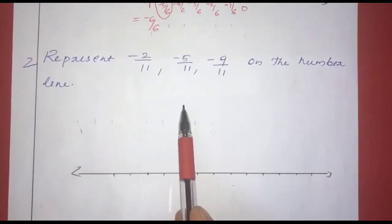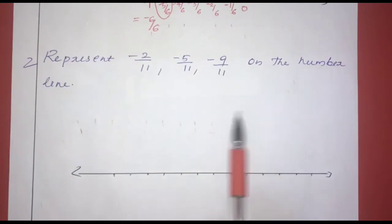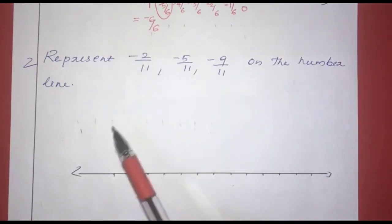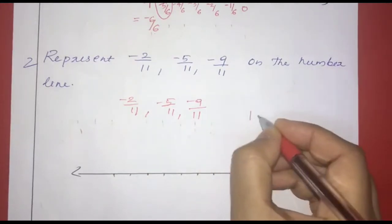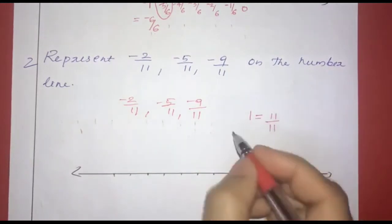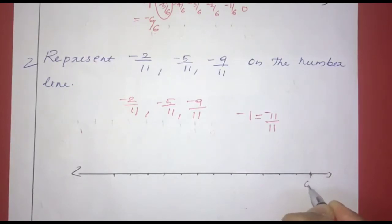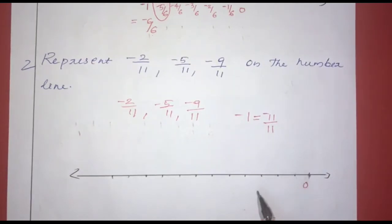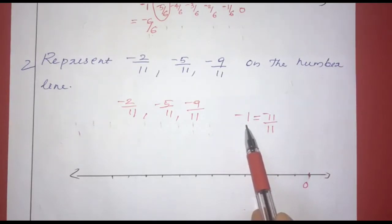The second question is: represent negative 2 by 11, negative 5 by 11, and negative 9 by 11 on the number line. We have to mark these three numbers on the number line. The denominator is 11, so 1 is equal to 11 by 11 and negative 1 is equal to negative 11 by 11. We divide 0 to negative 1 into 11 equal parts.